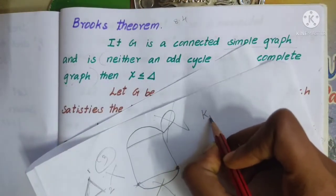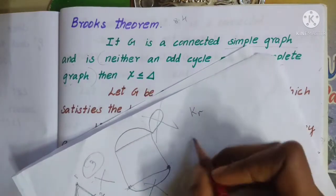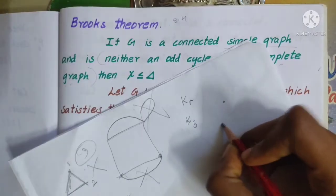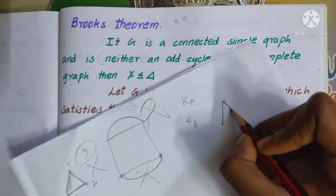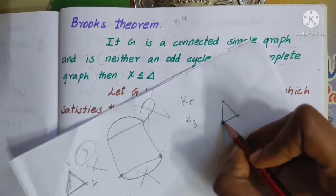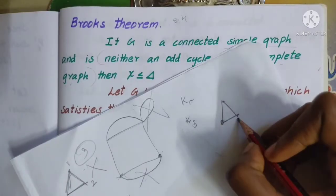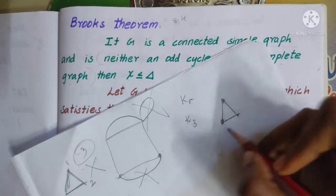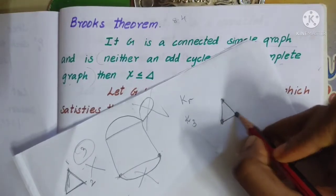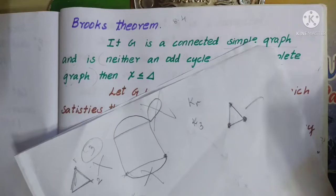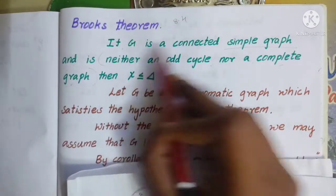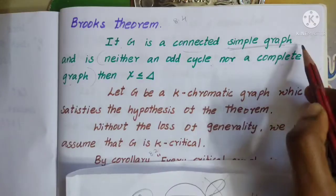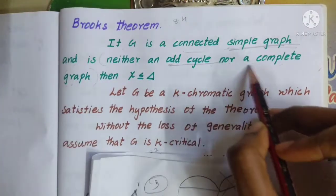A complete graph is denoted K_n. This is a connected simple graph — the same process applies. We will get a connected simple graph and we will get a complete graph.